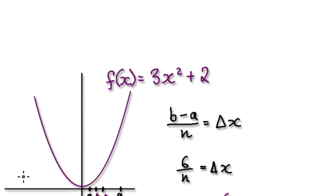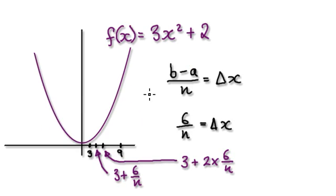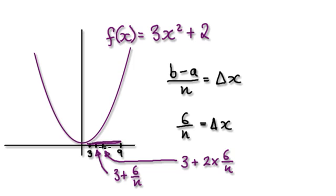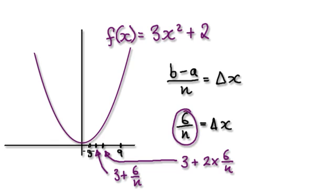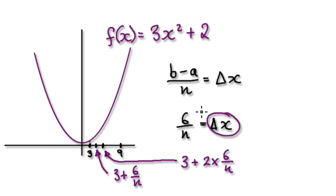So to do this, remember we're going to split this up from 3 to 9. B take away A would be — so this whole length here, which is B take away A — would be 6. And then cut it into n equal slices.